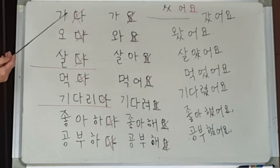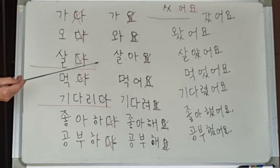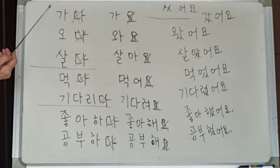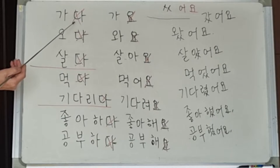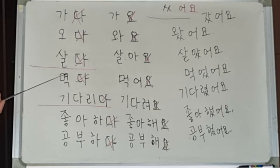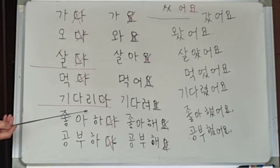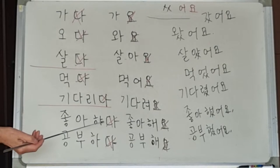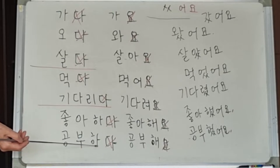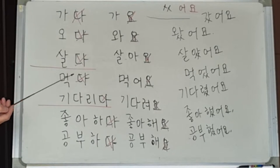But let's review first. Korean verbs all end with 다. The infinitive form ends with 다. For example: 가다 (to go), 오다 (to come), 살다 (to live), 먹다 (to eat), 기다리다 (to wait), 좋아하다 (to like), 공부하다 (to study). From these,